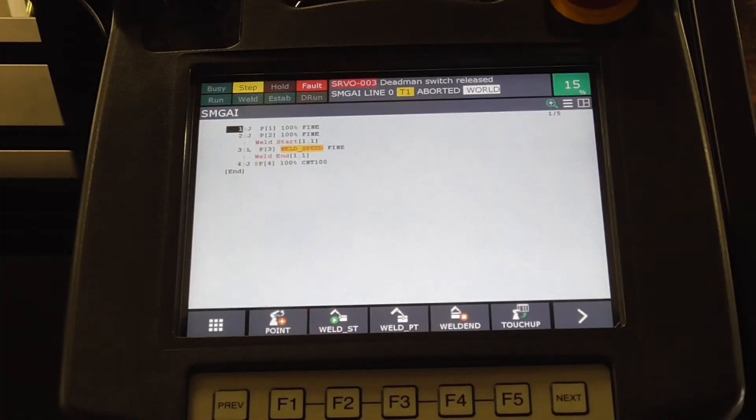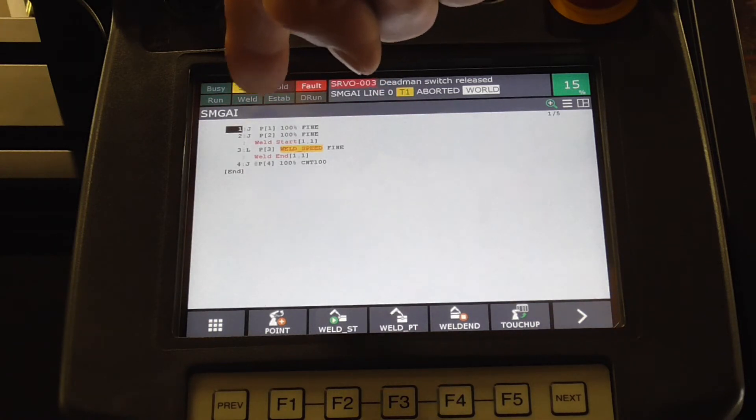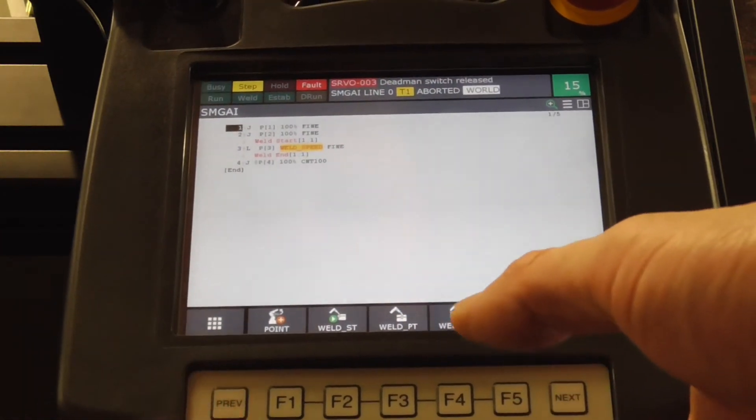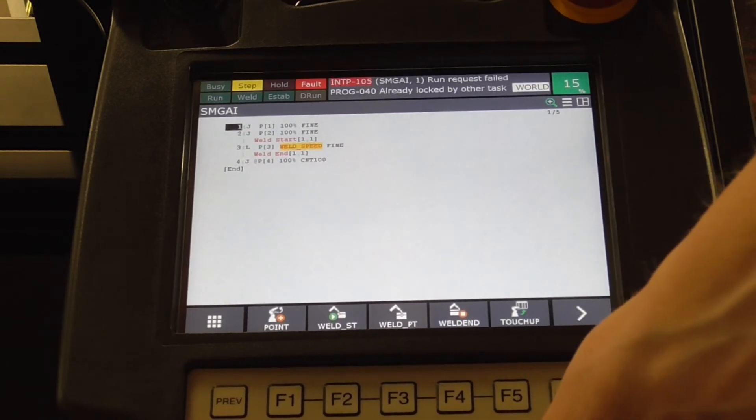Alright, so here we are at the teach pendant, and this is a quick program that I wrote to try and get it to fault like it does. When I get done with the program, there's only four points in here. On the fourth point, I scrolled back up to the first point and I'm in step mode. I want to hit shift forward to the first point and then record it as the fifth point. So basically, it's taking it to the exact same point that you started at. When I do that, I hold the dead man in, shift forward...